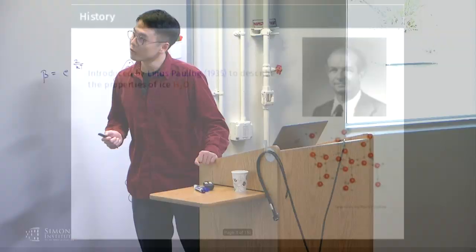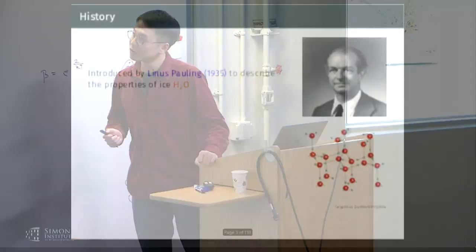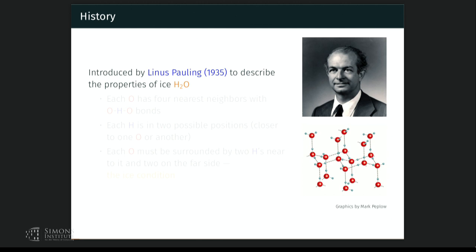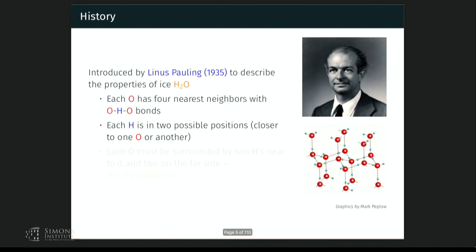First, about the six vertex model. This model was introduced by Linus Pauling in 1935 to describe the property of water ice. In water ice, each oxygen has four nearest neighbors with OHO bonds, and each hydrogen is in two possible positions — either closer to one oxygen or another. Each oxygen must be surrounded by two hydrogens near to it and two on the far side. This is called the ice condition.